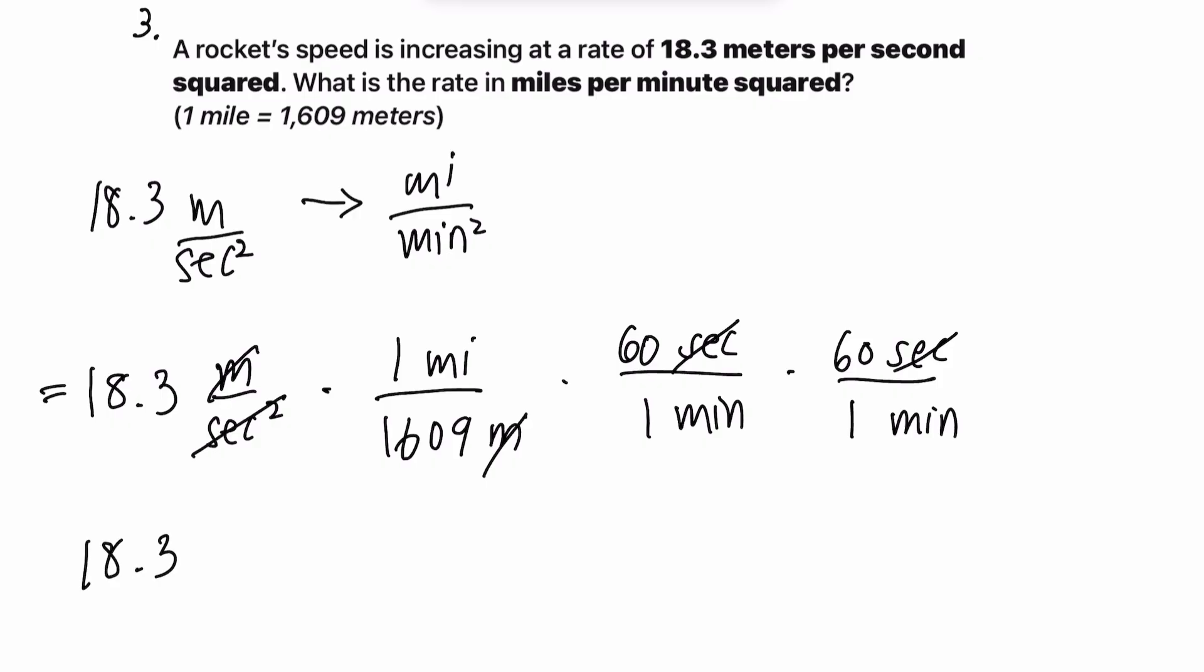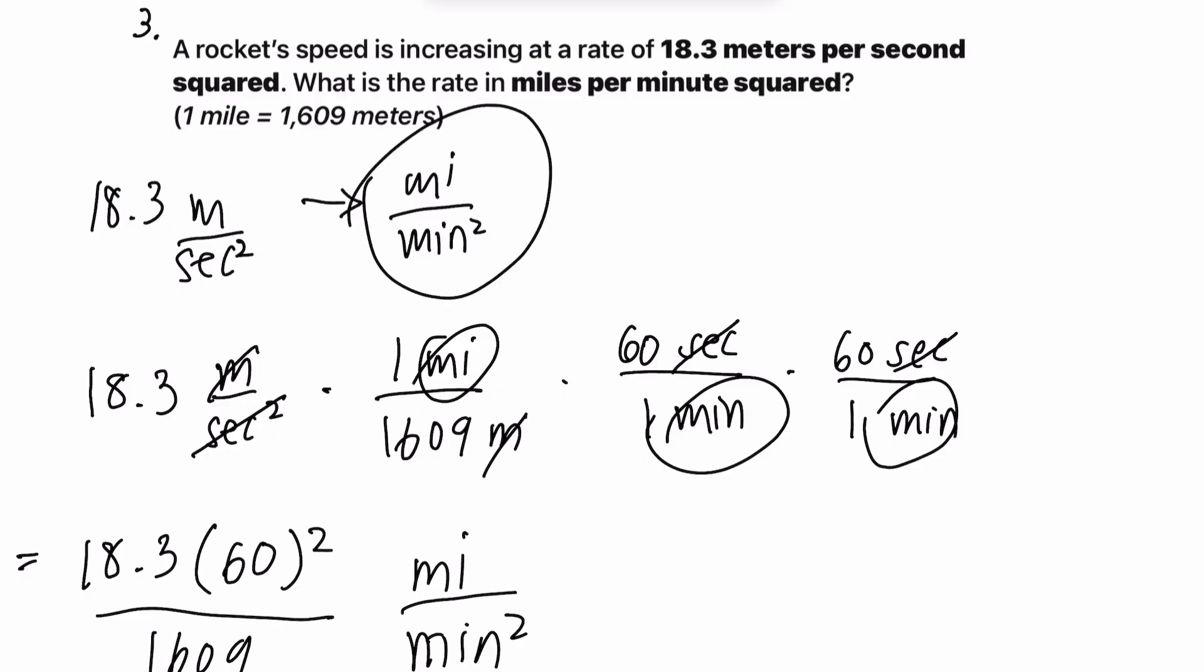These seconds cancels out with the second squared. So what we end up with is 18.3 times 60 squared over 16.09. And this miles over minutes squared, which is exactly the units that we want. Perfect.